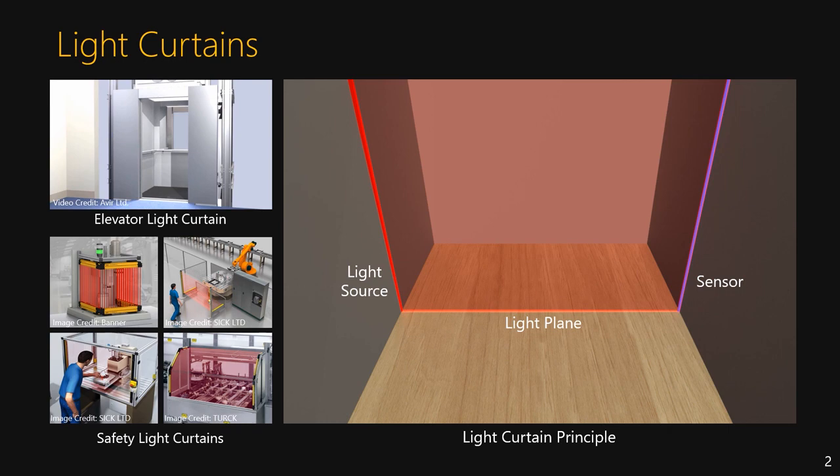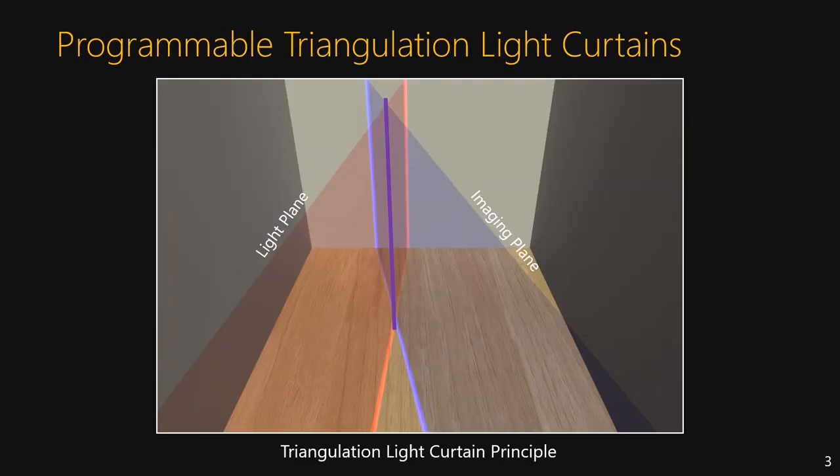In our work, we've taken the safety, reliability, and the concept of light curtains and made them fully programmable. We call our imaging method Programmable Triangulation Light Curtains. Triangulation light curtains are formed by first intersecting a plane of light with a plane of imaging to triangulate a line. This line forms a linear sample of the volume and is the only part of the scene we are capturing.